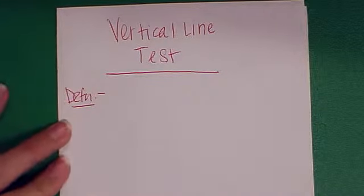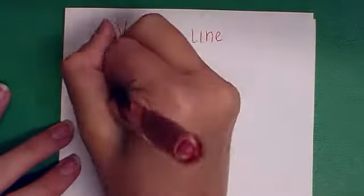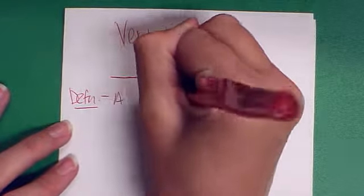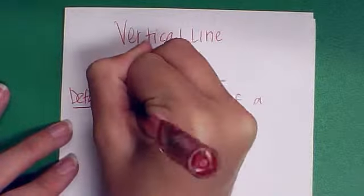Today in Algebra 1 we learned how to use the vertical line test. The definition of the vertical line test is a test to see if a graph is a function.